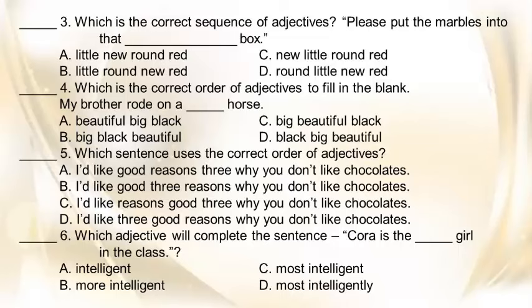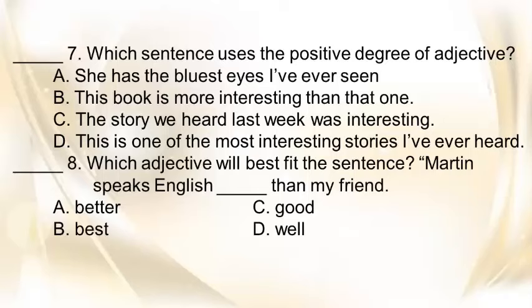6. Which adjective will complete the sentence, 'Cora is the blank girl in the class?' 7. Which sentence uses the positive degree of the adjective? A. She has the bluest eyes I've ever seen. B. This book is more interesting than that one. C. The story we heard last week was interesting. D. This is one of the most interesting stories I've ever heard. 8. Which adjective will best fit the sentence? 'Martin speaks English blank than my friend.' A. Better. B. Best. C. Good. D. Well.